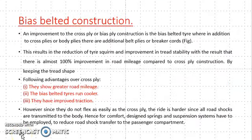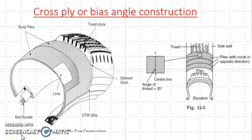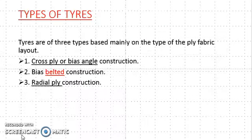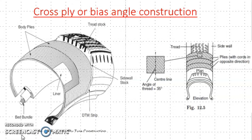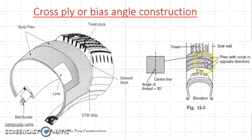In the previous video, we have seen cross ply bias angle construction. In this case, the plies are placed one over the other and the directions are opposite to each other. That's why it is called cross ply bias angle construction.